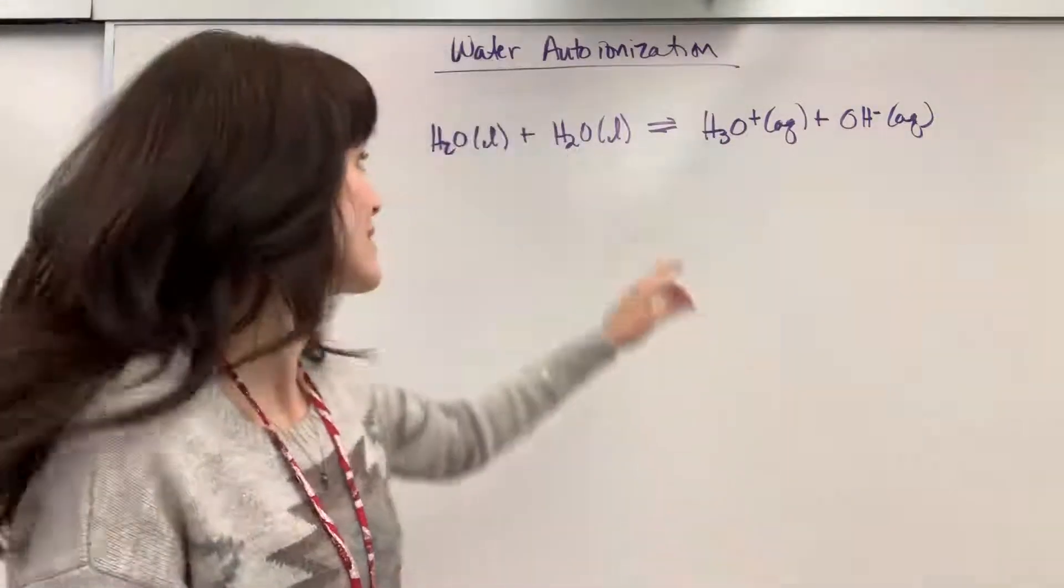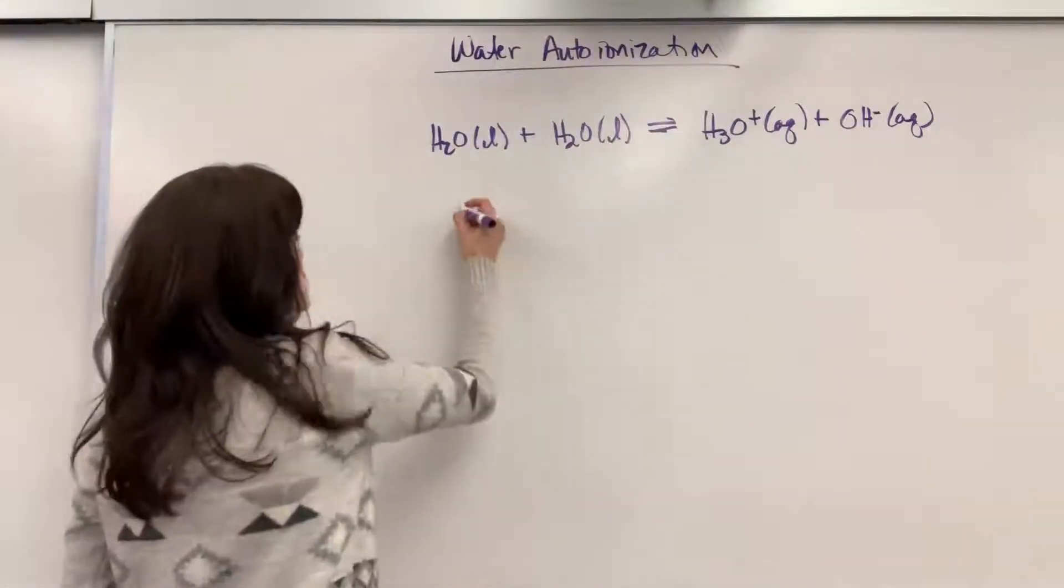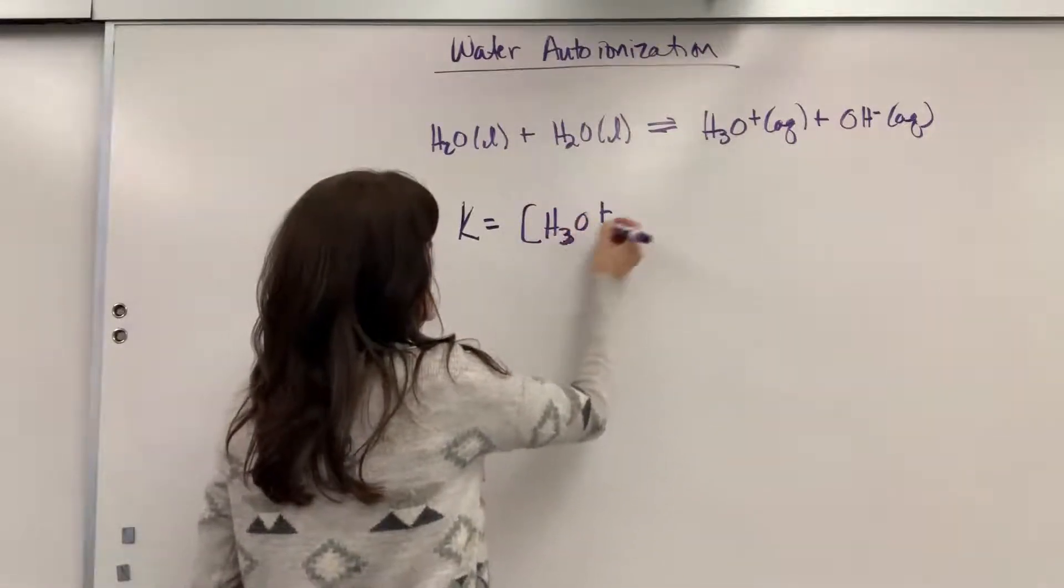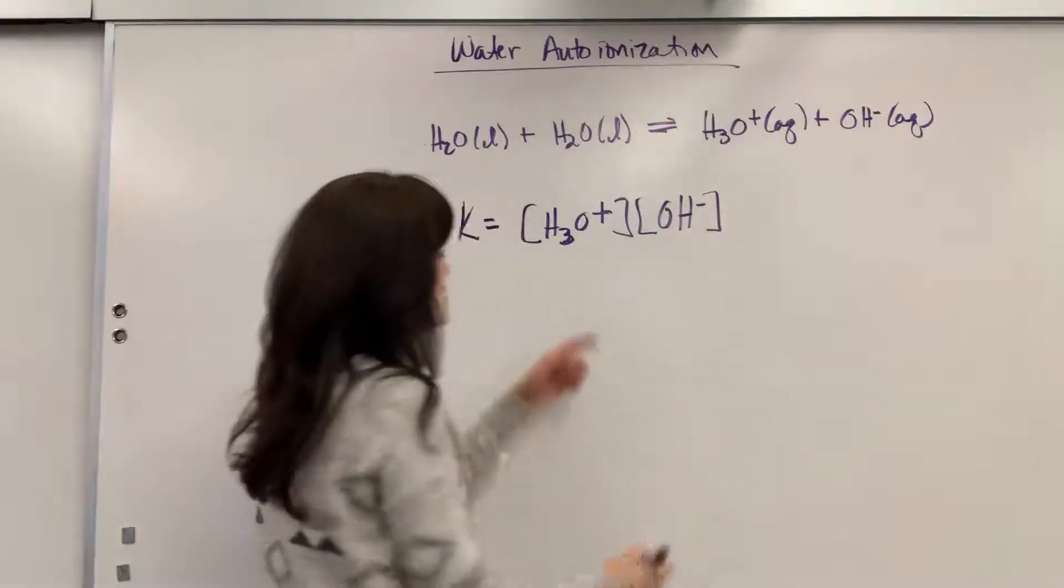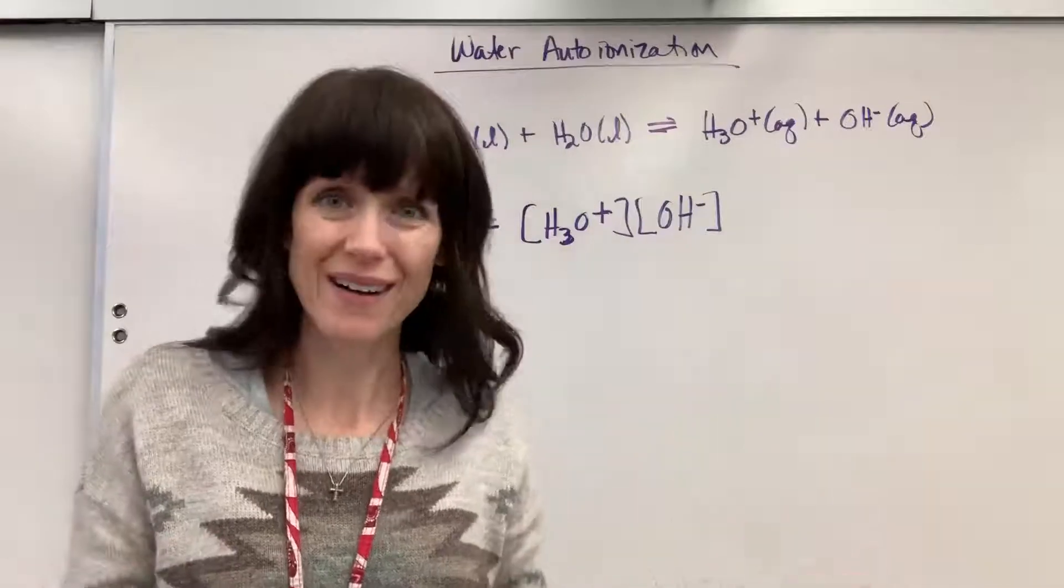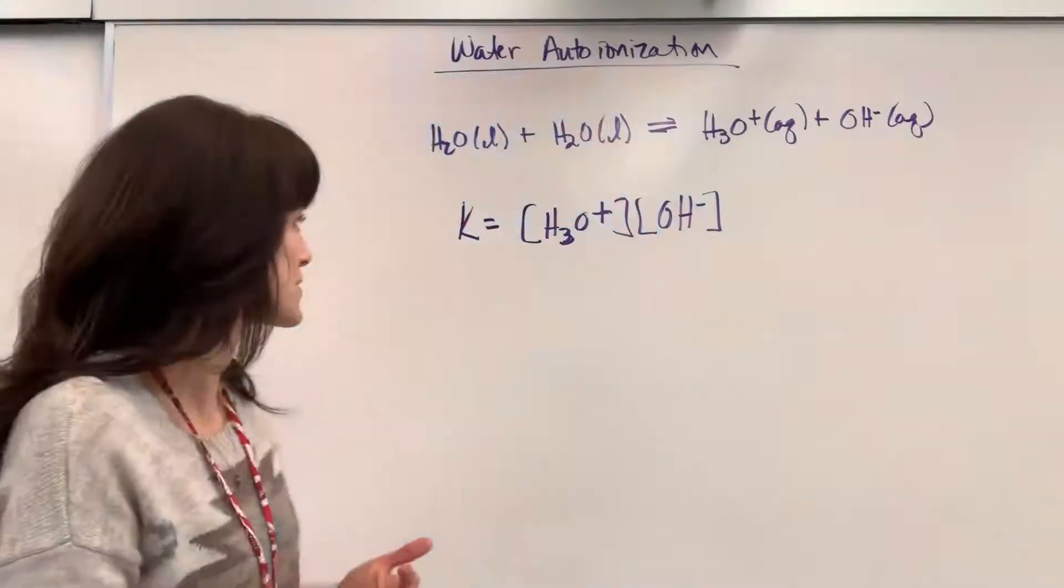Now let's go ahead, notice it's in equilibrium, and write our equilibrium expression. So we're going to have products over our reactants, it will be the hydronium ion times the hydroxide ion, divided by our reactants. But the reactants are all liquids, and you'll recall that we only use gas and aqueous when we're writing our equilibrium expression.